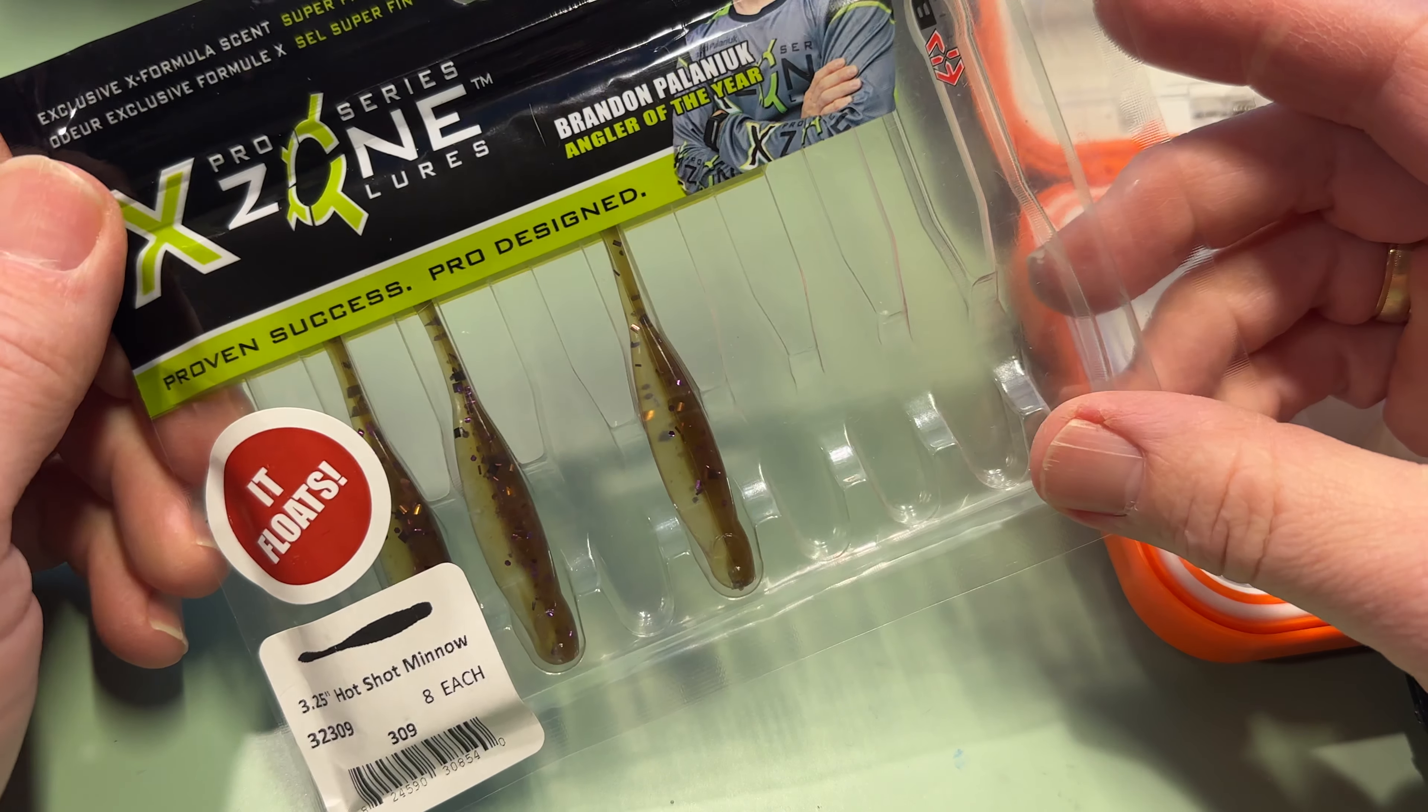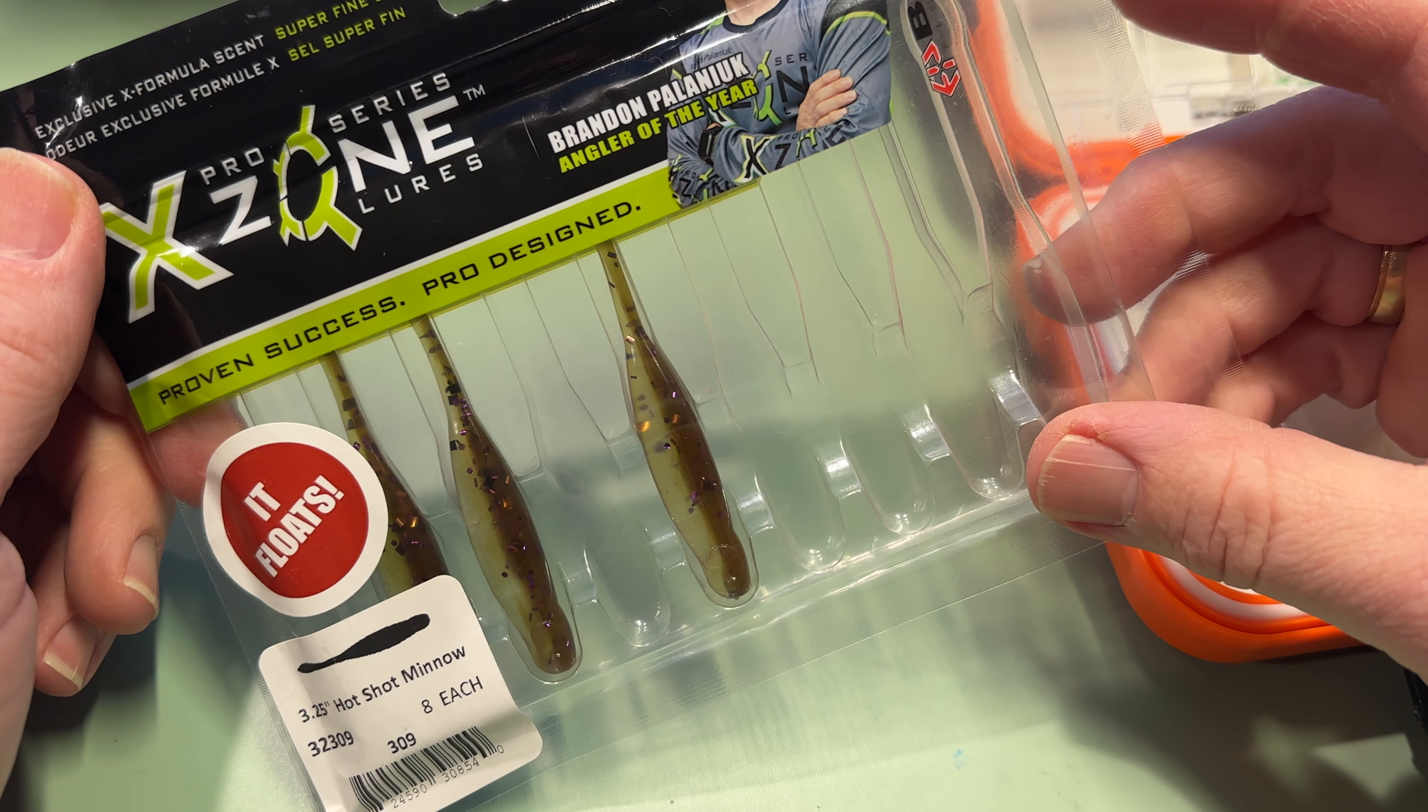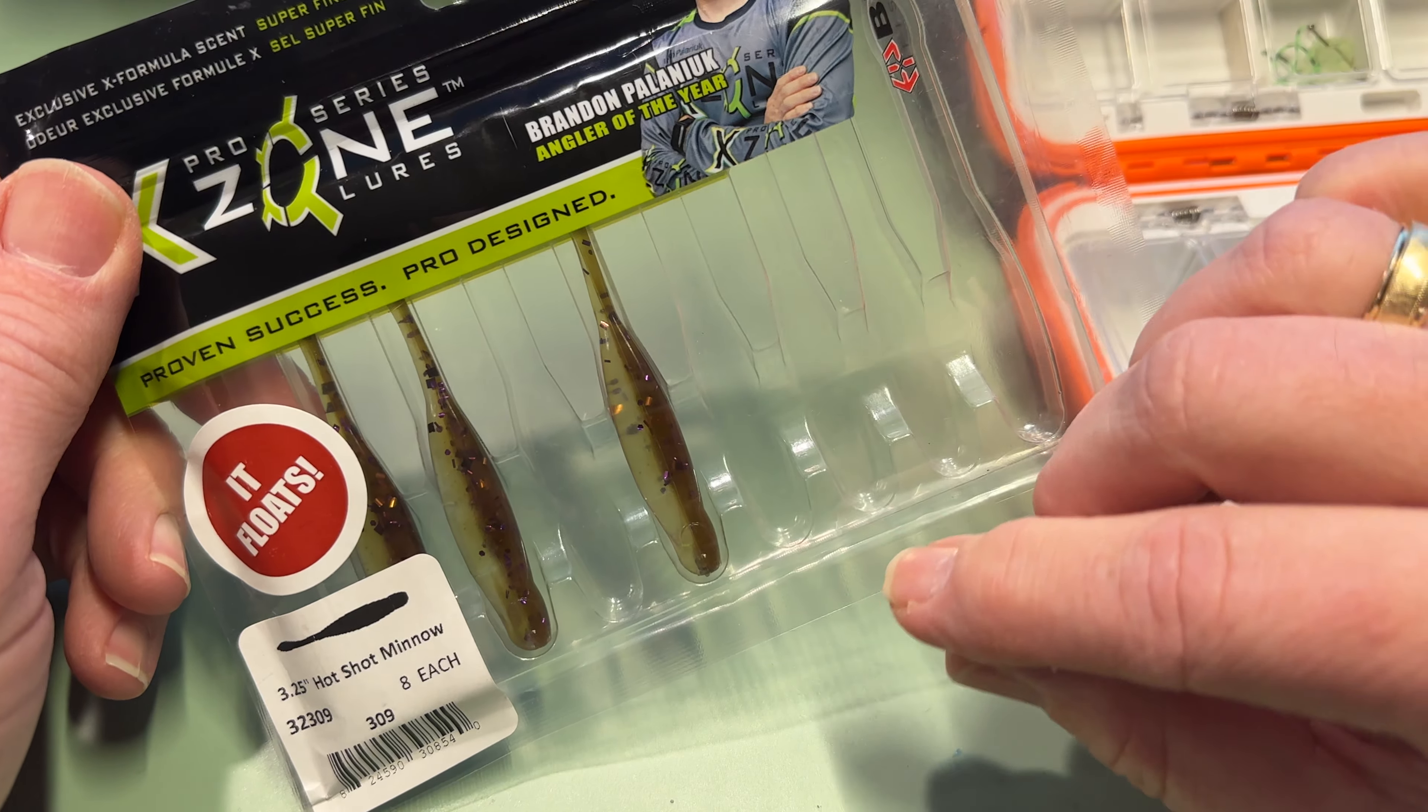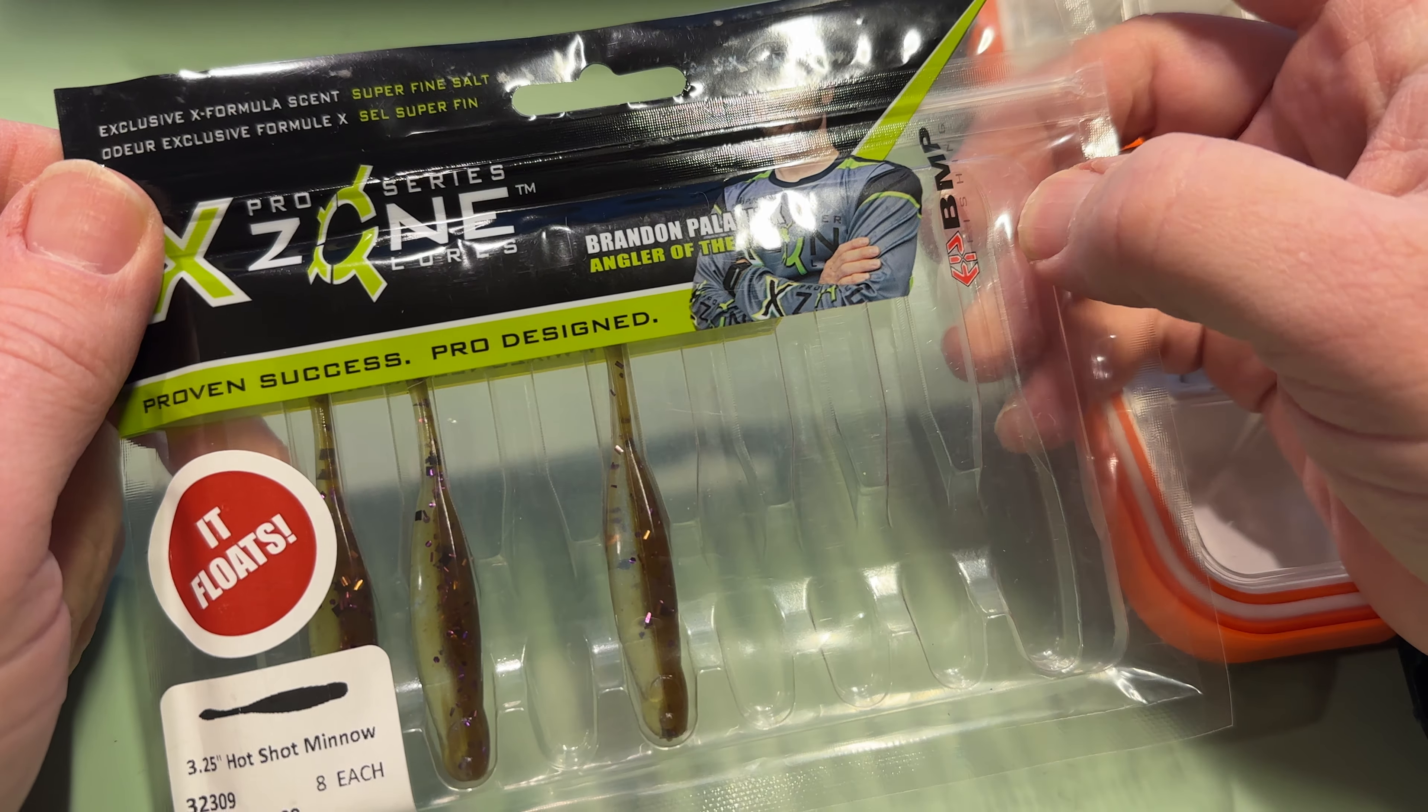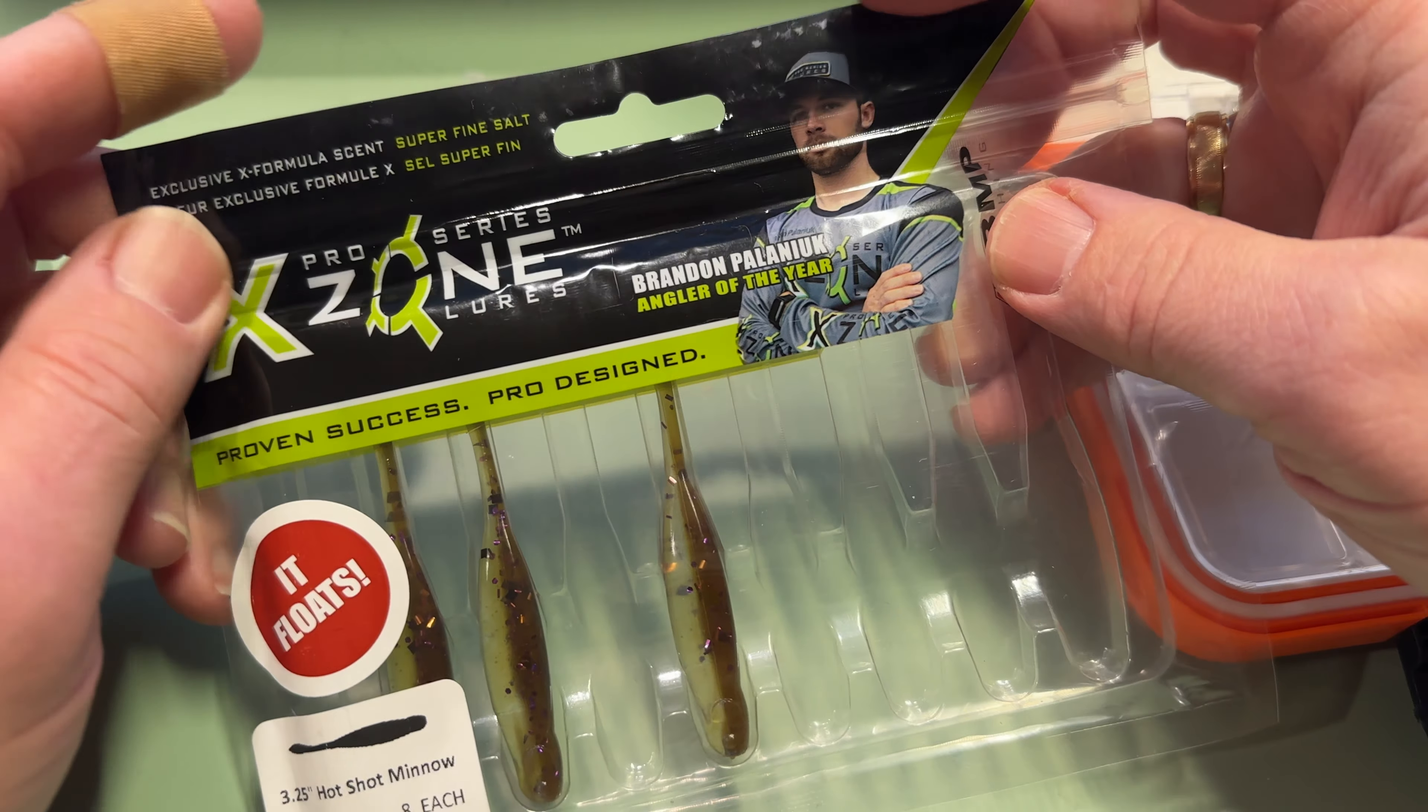Okay, hello to the group. Welcome to the channel. Today I'm going to rig up one of my most favorite lures of late, and that is the X-Zone 3.25-inch Hot Shot Minnow. I've been catching a lot of fish on this bait, and I thought I'd just show you what I've been doing.